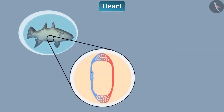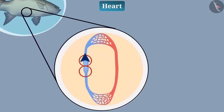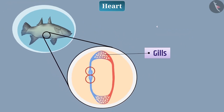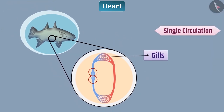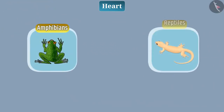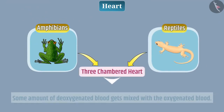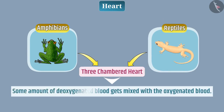There are two chambers in the heart of fish. For oxygenation, blood is carried to the gills from the heart, and from the gills the oxygenated blood is transported to all body parts. Thus in every round of circulation in fish, blood enters the heart once — this is called single circulation. Animals such as amphibians and reptiles have three-chambered hearts, due to which some deoxygenated blood gets mixed with oxygenated blood.